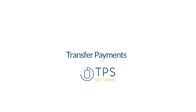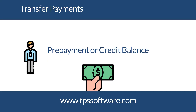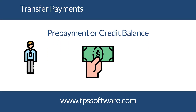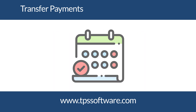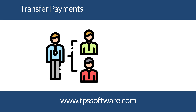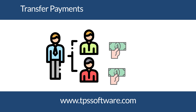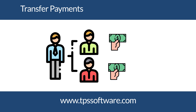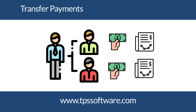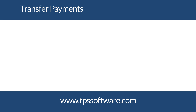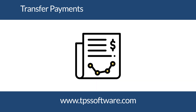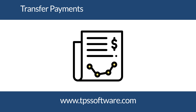Transfer payments. In many cases, you may receive a retainer from client A that will sit on their account as a prepayment credit balance. A few weeks later, they may ask you to take that payment and apply it to client B, a related client of theirs. Now in TPS, you'll be able to transfer a prepayment from one client to another client. Along with this, you'll also be able to run a payment transfer report to confirm the trail of where a payment was transferred from and which client it was transferred to.